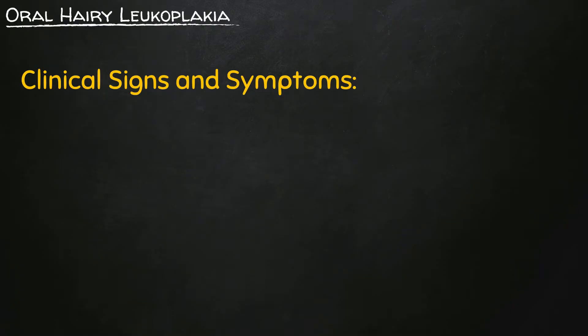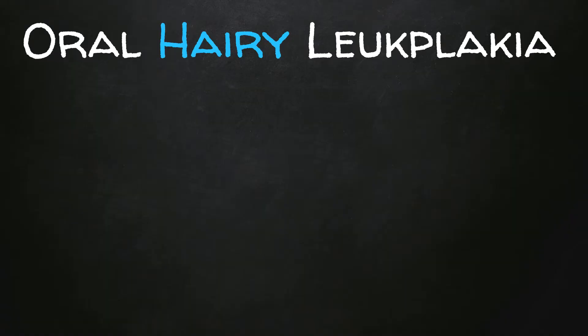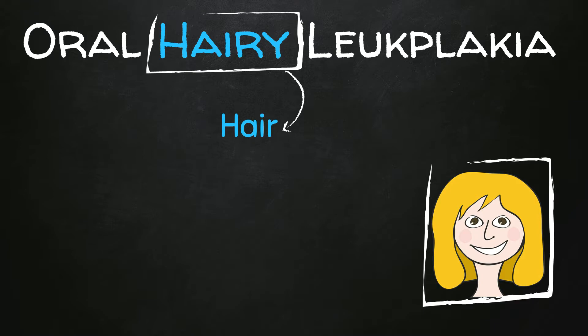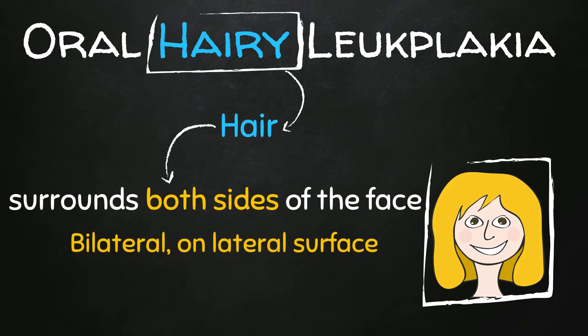Now clinical signs and symptoms: a white patch on the lateral borders of the tongue that is often bilateral. How can we remember this site for oral hairy leukoplakia? Hairy means hair. Now does hair surround one side of the face or both sides of the face? Of course it surrounds both sides of the face, which means that it is bilateral and occurs on the lateral surfaces. So oral hairy leukoplakia occurs on both sides of the tongue.